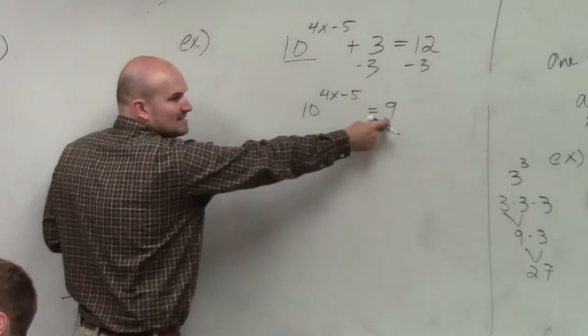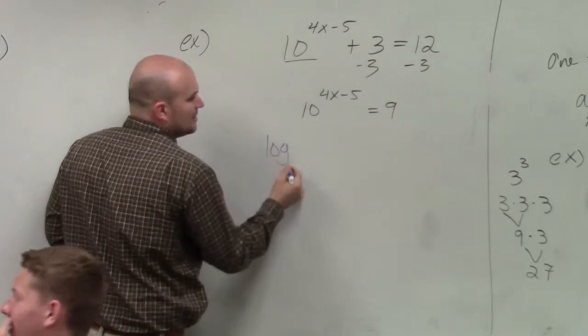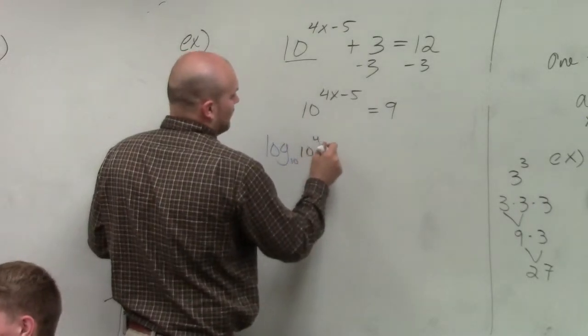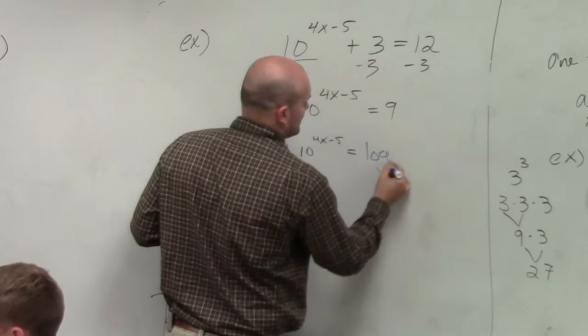I don't want to take log base 9. I want to take log base 10 so I can get the x off. So I do log base 10 of 10 to the 4x minus 5 equals log base 10 of 9.